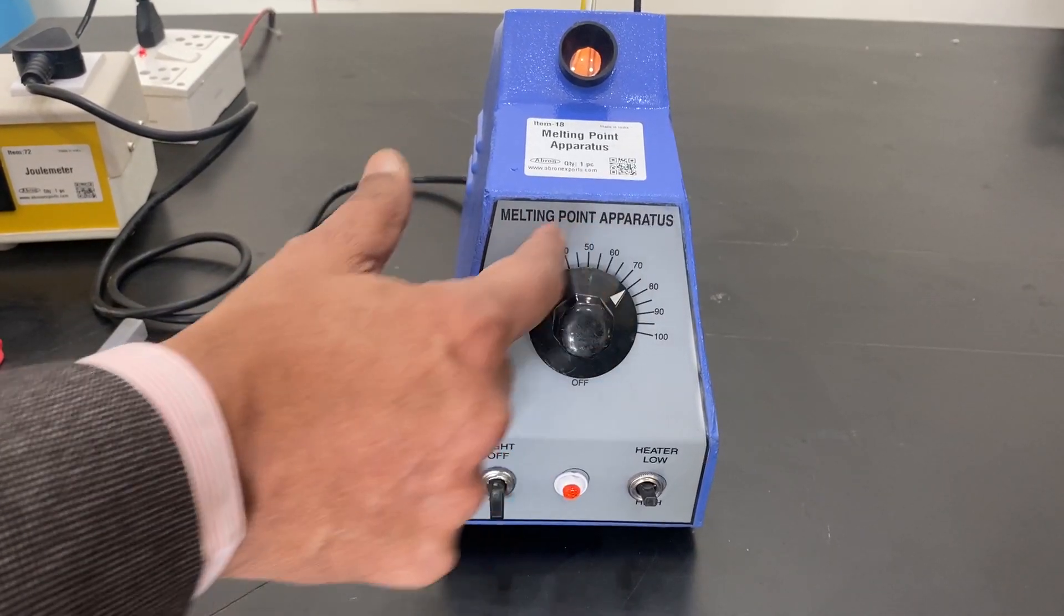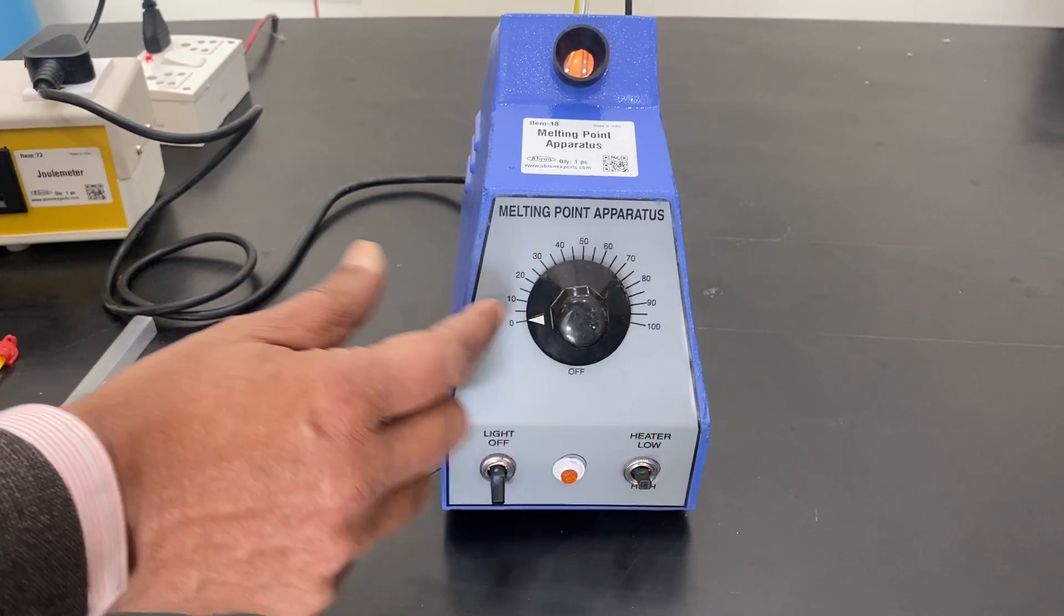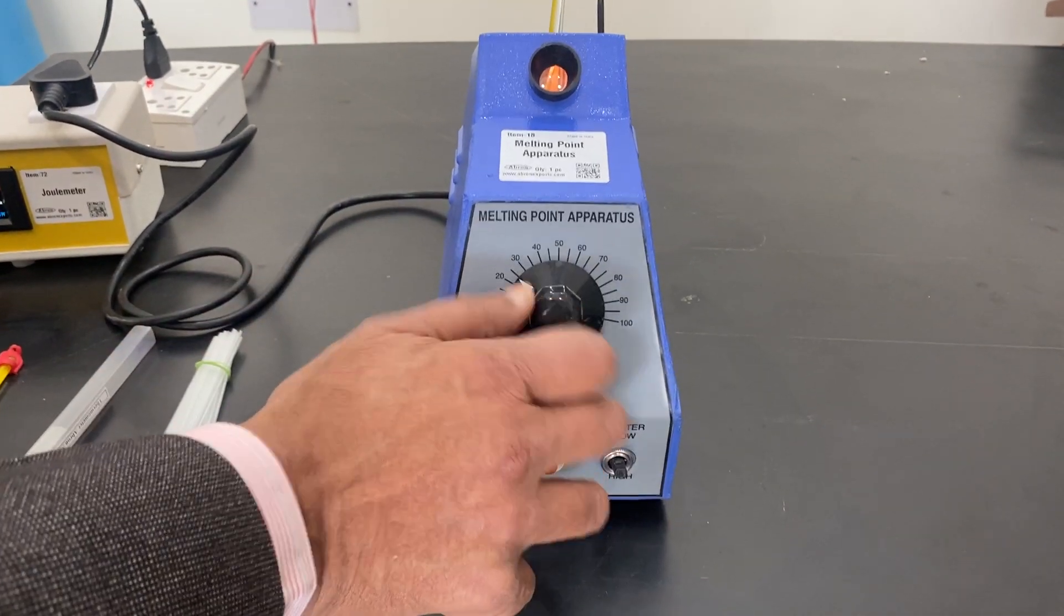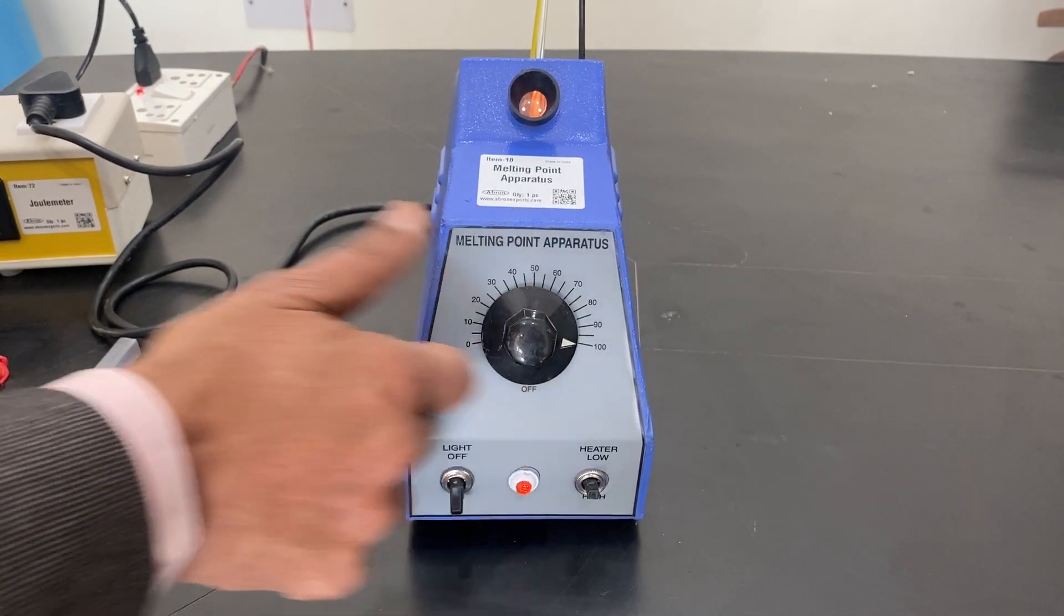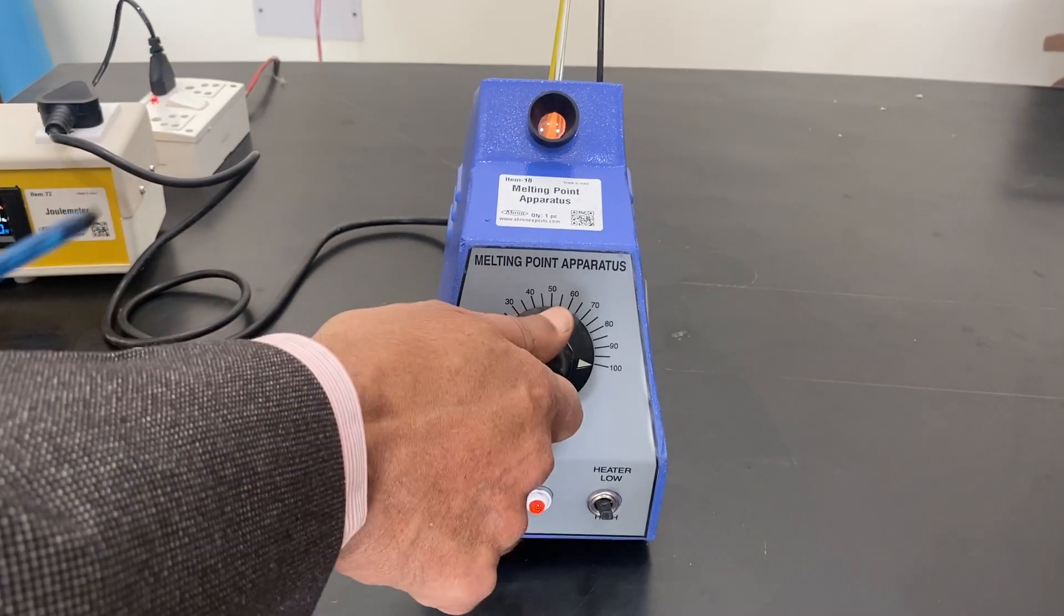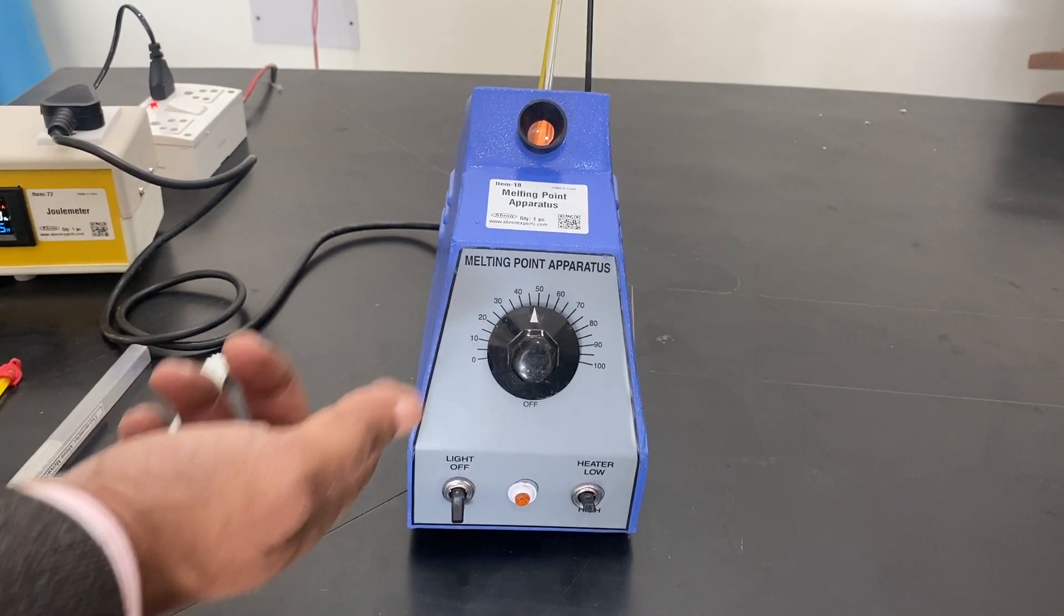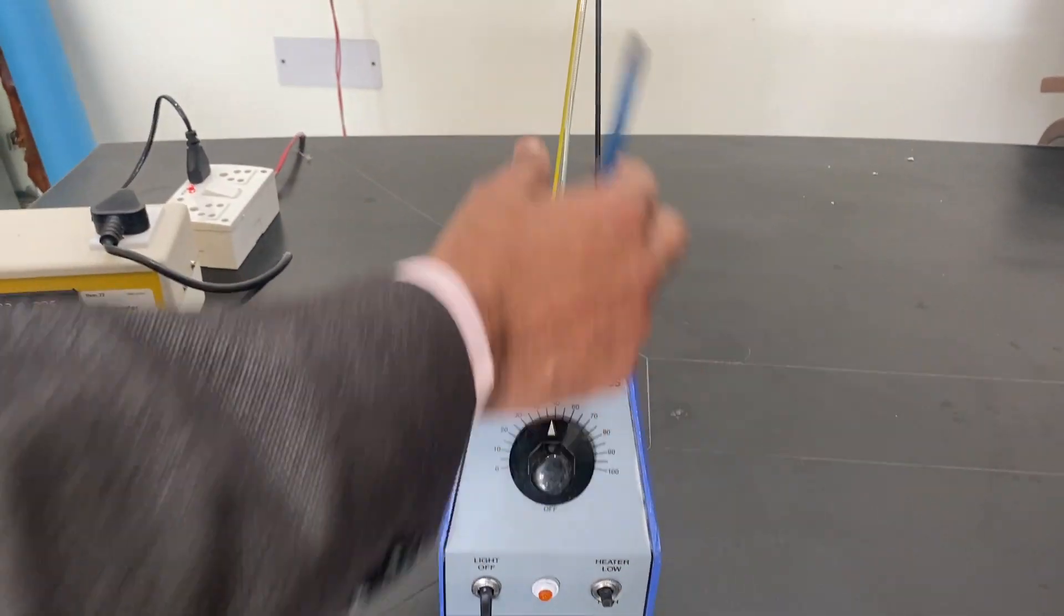This is not a thermostat, this is only the speed of heating between 1 to 30 for slow heating. It's medium heating up to 60-70, and then up to 90 degrees it's faster. Never put it on 100, then it will not stop heating at all. It will keep on increasing.